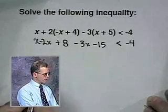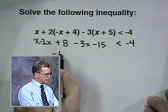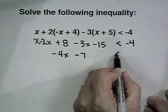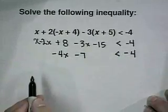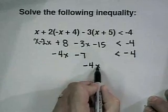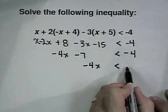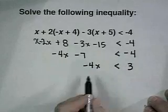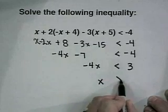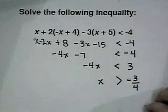Let's combine terms now: x minus 2x minus 3x gives negative 4x, and 8 minus 15 gives negative 7, less than negative 4. Let's add 7 to both sides: negative 4x is less than 3. Dividing both sides by negative 4 will turn the inequality around and give us our answer of negative 3/4.